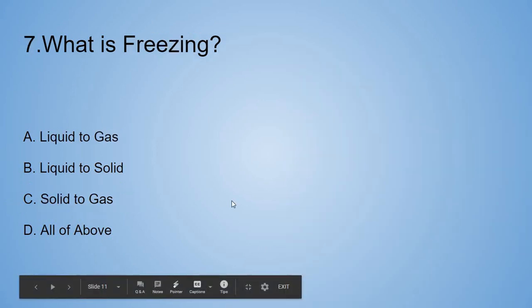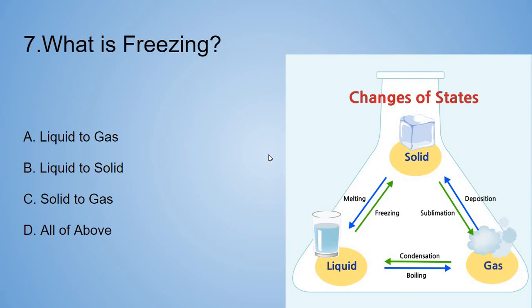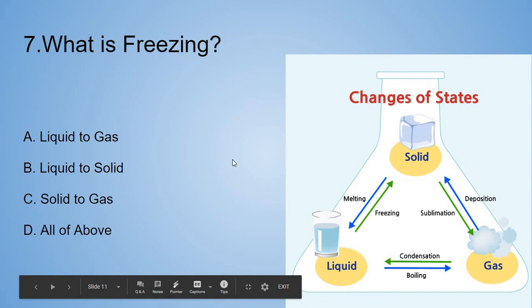Number 7. What is freezing? A. Liquid to gas. B. Liquid to solid. C. Solid to gas. D. All of the above. Wait, never mind. Mr. Helper Diagram, come out. Freezing. Where is it? There we go. Freezing right here. Liquid to solid. And that is the answer!